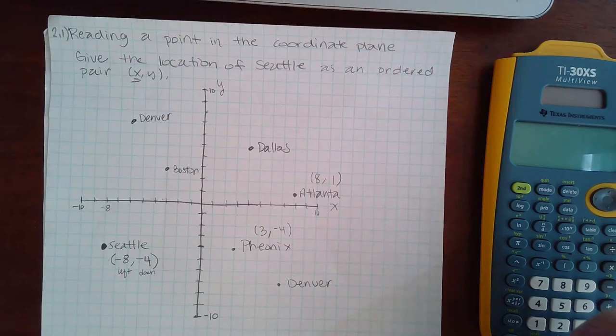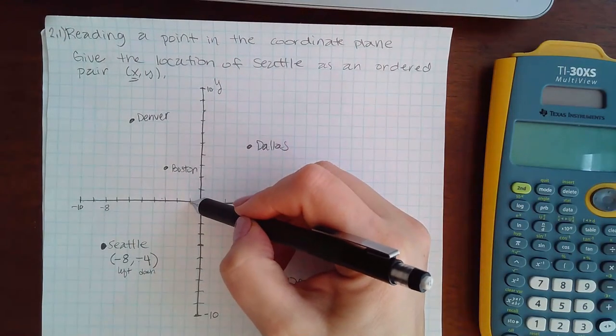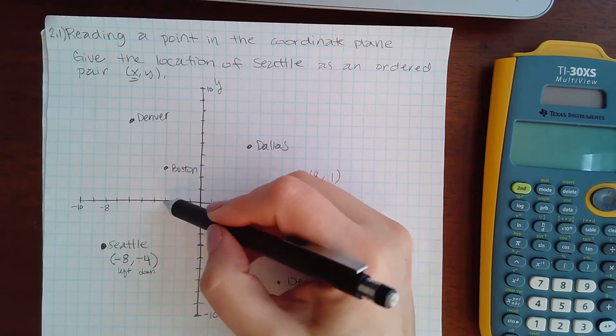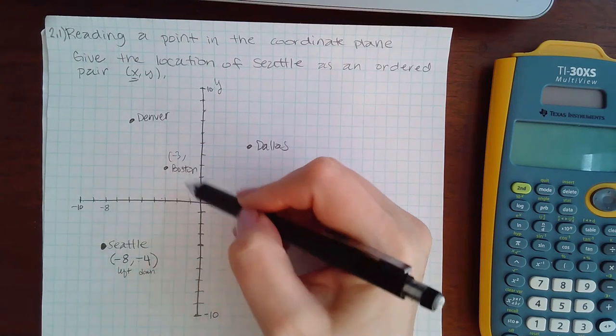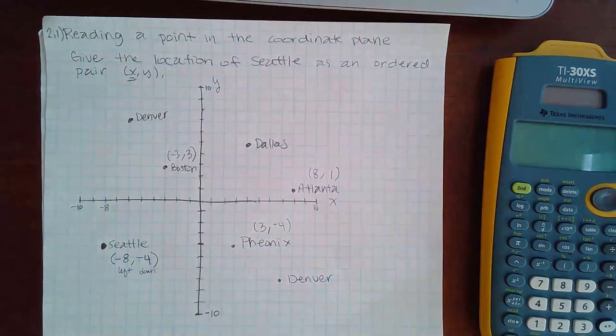If they asked you the values for Boston, it would have been negative in the x: 1, 2, 3, and up 1, 2, 3, so a positive 3 for the y.